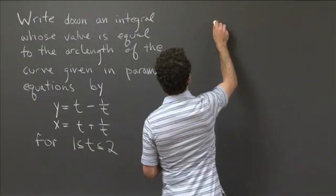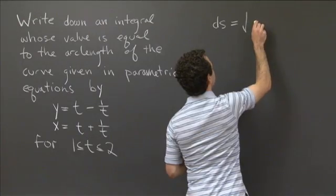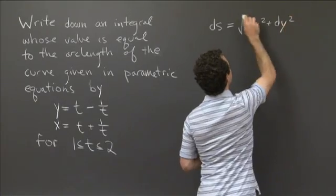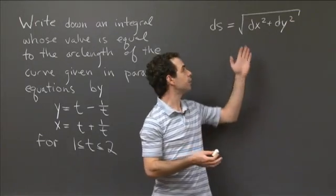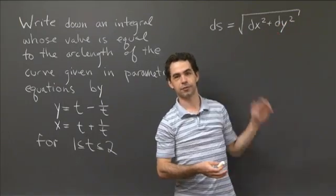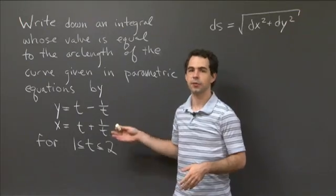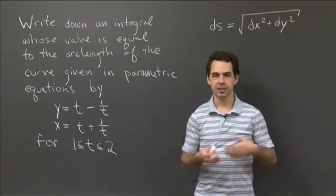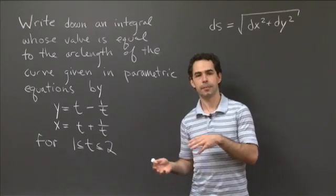So in general, the little element of arc length is given as ds = √(dx² + dy²). Now, when our curve is given in rectangular coordinates, usually what we do is factor out a dx², and then we have dy/dx, the derivative of y with respect to x. But here, we don't have x or y given in terms of the other one. We have them both given in terms of this parameter t. So the parameter t is our independent variable, the thing we're going to want to end up integrating with respect to.